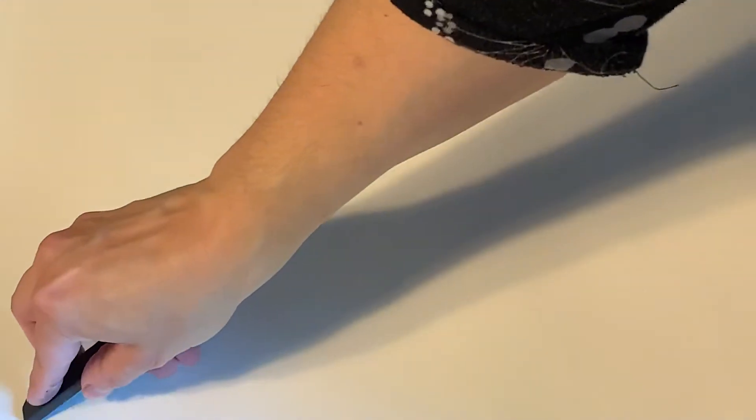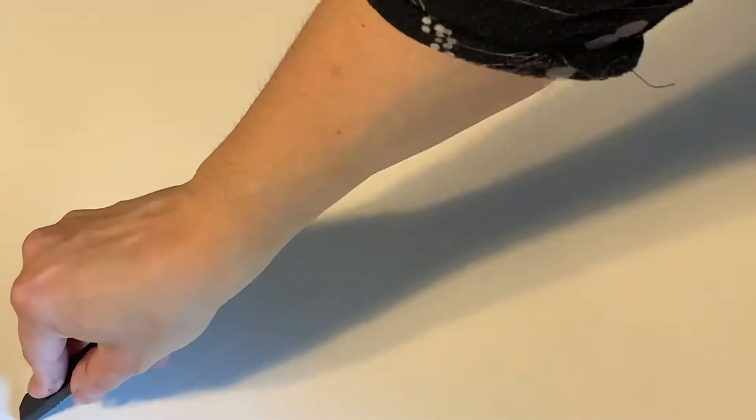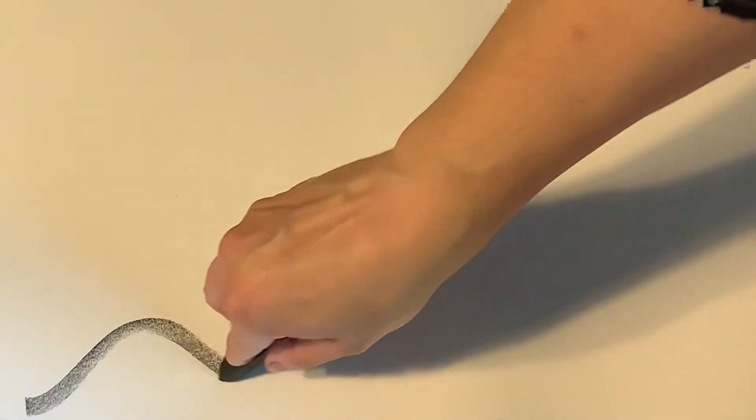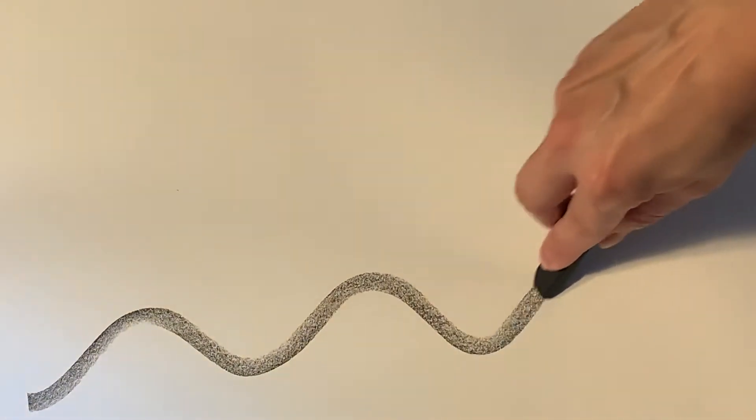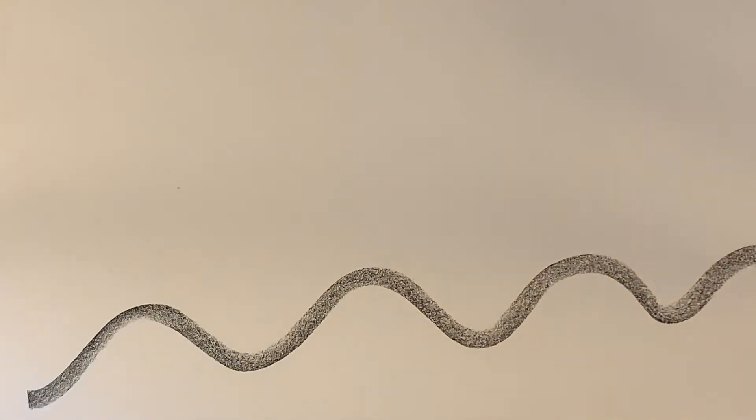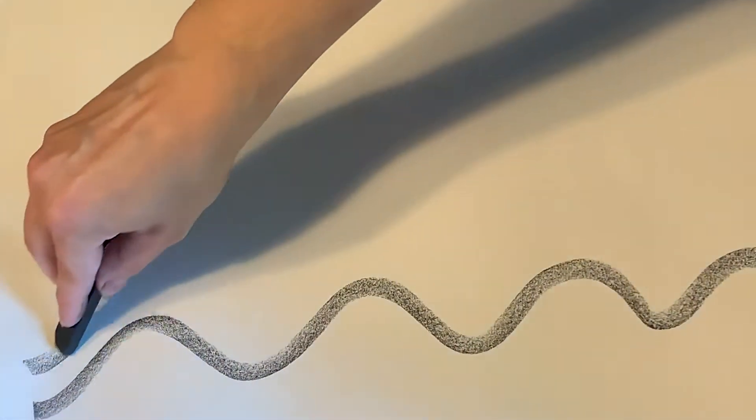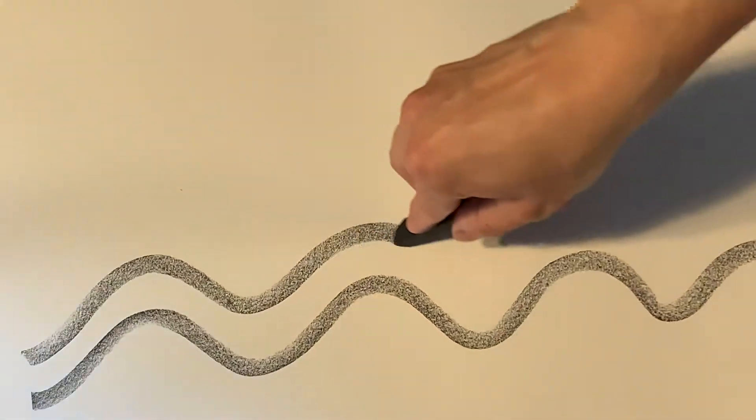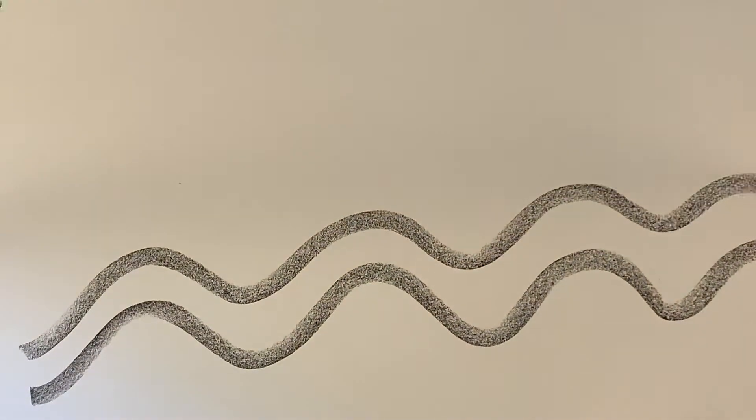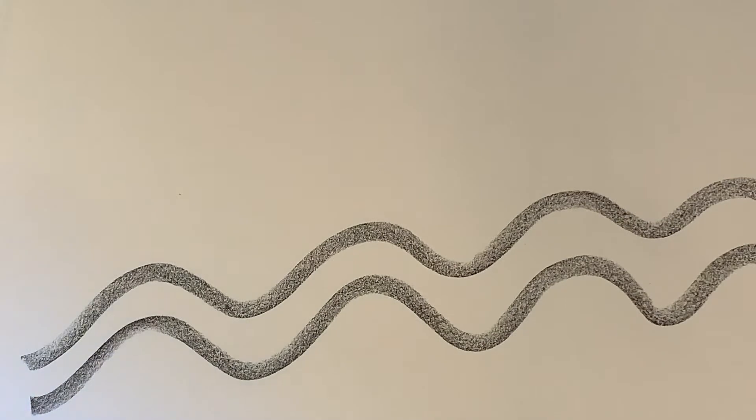You can make really smooth, calm lines. I'm just using the edge of the charcoal here, and I'm gently pressing it down on the paper and then just moving it up and down to make a nice calm, smooth line. When you're using the edge like that, you don't really get a hard-edged line.